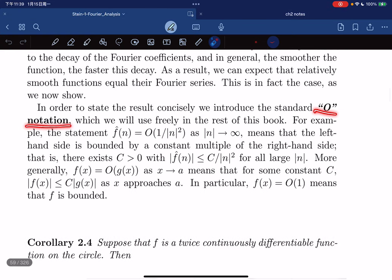Big O notation, the coefficient is the big O of this means that the left hand side is bounded by a constant multiple of the right hand side. So this is bounded by a constant multiple of 1 over n square absolute value. There exists C such that it is bounded by this for large n. So no matter for positive or negative.